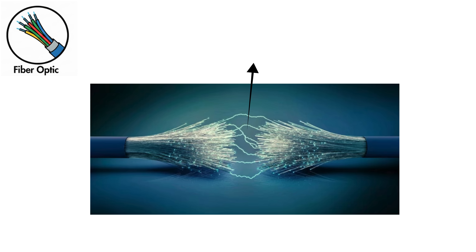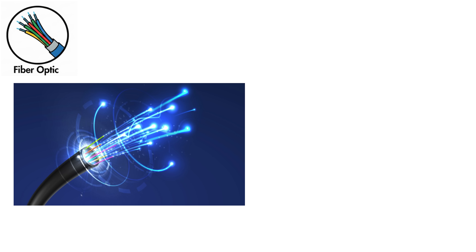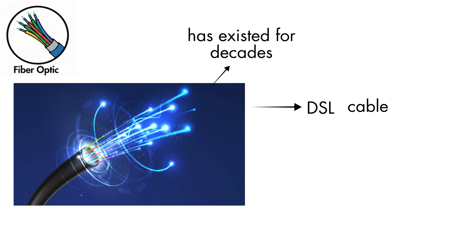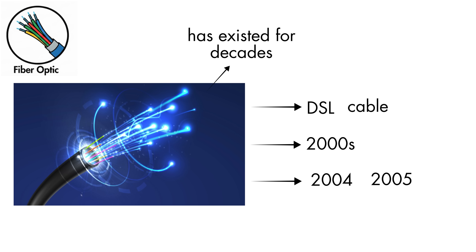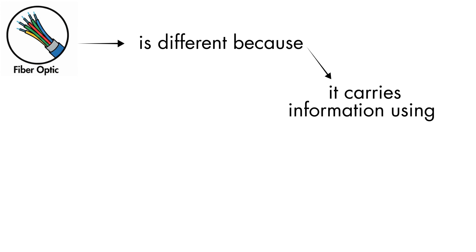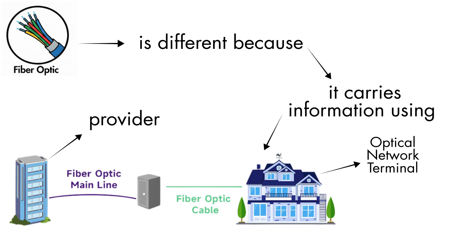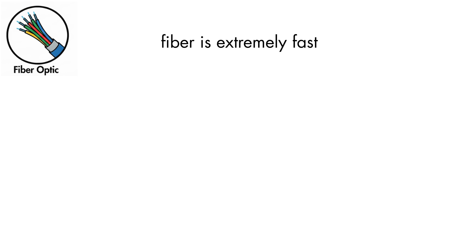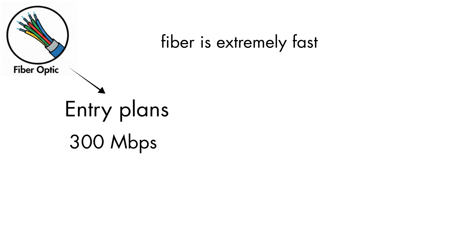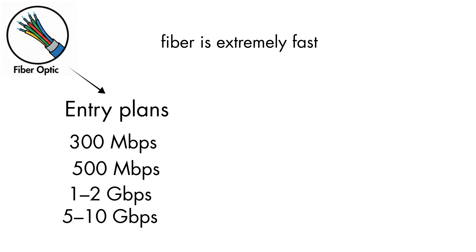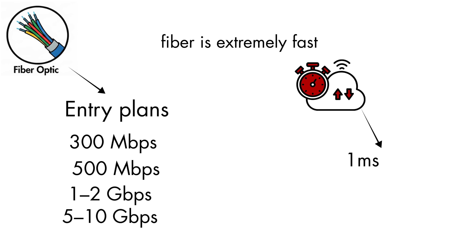Fiber optic internet uses tiny strands of glass or plastic to send data as pulses of light. It's the fastest and most reliable home internet today, far outperforming older copper systems like DSL and cable. Although the concept has existed for decades, true fiber to the home began rolling out in the early 2000s, with major deployments around 2004–2005. Fiber carries information using light instead of electricity. In full FTTH setups, the fiber runs directly from the provider to the home and connects to an optical network terminal, which converts the light signal for your Wi-Fi router. This design naturally supports equal download and upload speeds. Entry plans start around 300–500 Mbps, many offer 1–2 Gbps, and premium areas can reach 5–10 Gbps. Latency is extremely low, usually between 1–10 ms.